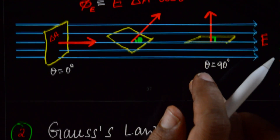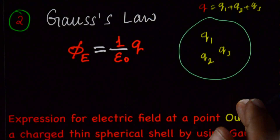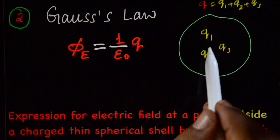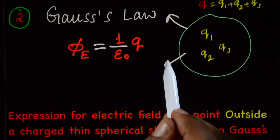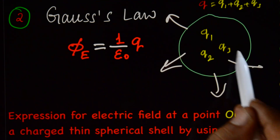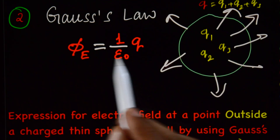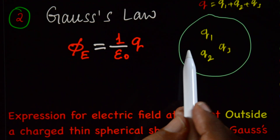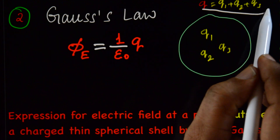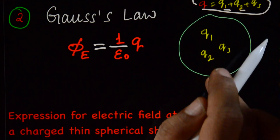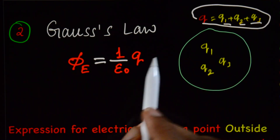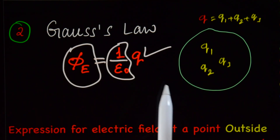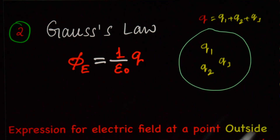Another thing you should know is Gauss's law. Gauss's law states that the flux through any closed surface or imaginary Gaussian surface is equal to 1 by epsilon naught times the total charge enclosed by that surface. Here the total charge enclosed is Q, which equals Q1 plus Q2 plus Q3.